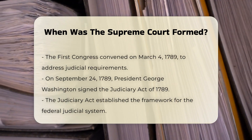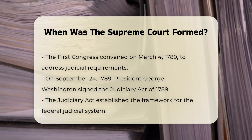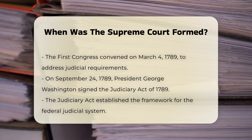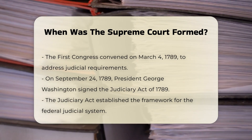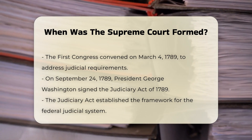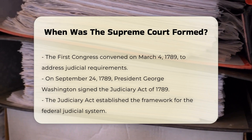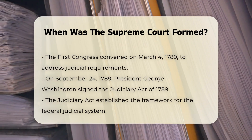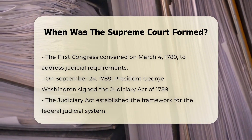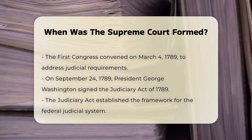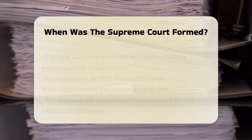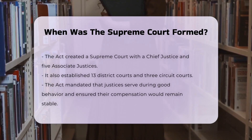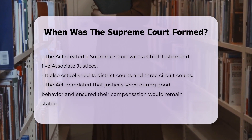This was left to the First Congress, which met on March 4, 1789. One of the first items of business for this Congress was to fulfill the requirements of Article 3, Section 1 of the Constitution. On September 24, 1789, President George Washington signed the Judiciary Act of 1789, a legislation that established the framework for the federal judicial system. This act set up a Supreme Court with a chief justice and five associate justices, and also established 13 district courts and three circuit courts.